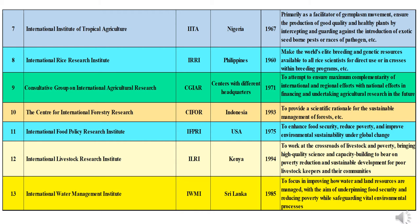ILRI works with partners worldwide to help poor people keep their farm animals alive and productive, increase livestock and farm productivity, and find profitable markets for their animal products. Thirteenth is IWMI — International Water Management Institute — headquartered at Sri Lanka, established in 1985. IWMI researches water management in agriculture, irrigation, groundwater, river basins, wetlands, ecosystems, food security, wastewater, and climate change, with the aim of underpinning food security and reducing poverty while safeguarding vital environmental processes.